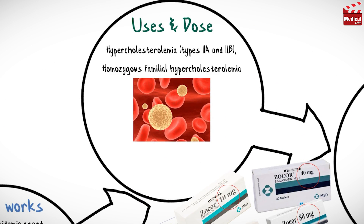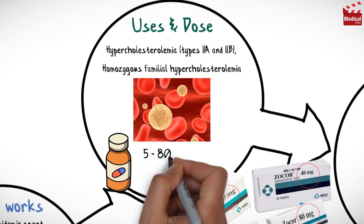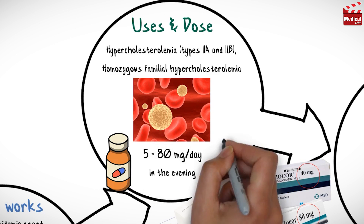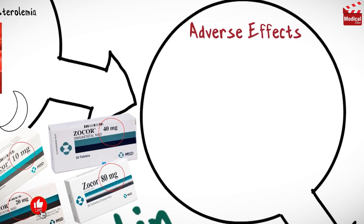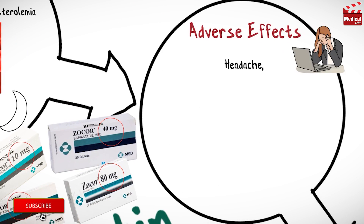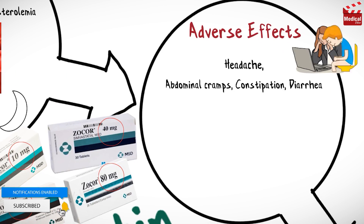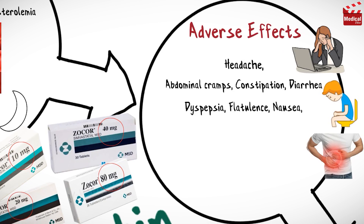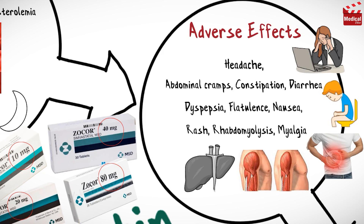The usual dosage of simvastatin is 5 to 80mg per day in the evening. Simvastatin may cause headache, abdominal cramps, constipation, diarrhea, dyspepsia, flatulence, nausea, rash, rhabdomyolysis, and myalgia.